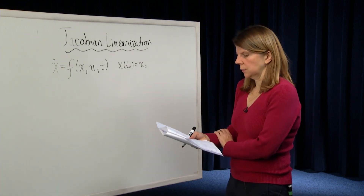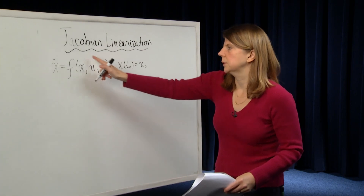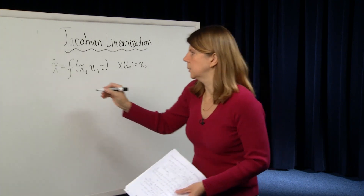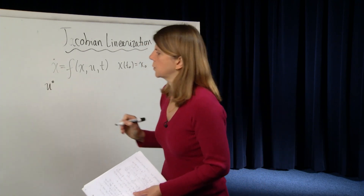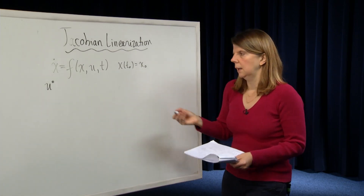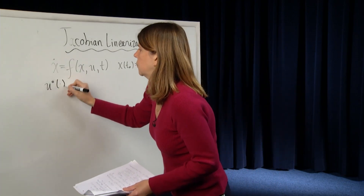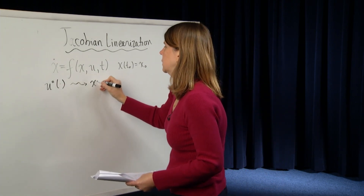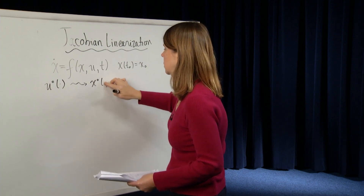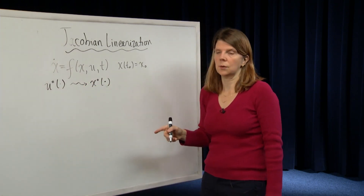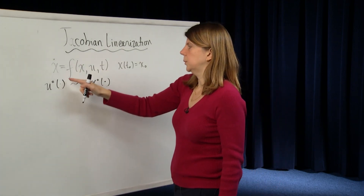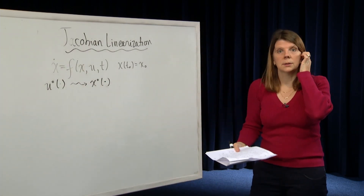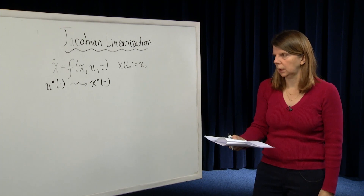What is Jacobian linearization? Suppose you apply some nominal input — I'll use superscript 0 to indicate the nominal input. It's a function applied over a time horizon. If you apply that nominal input u⁰, you end up with some solution to that differential equation over the time horizon of interest — the nominal state trajectory x⁰.